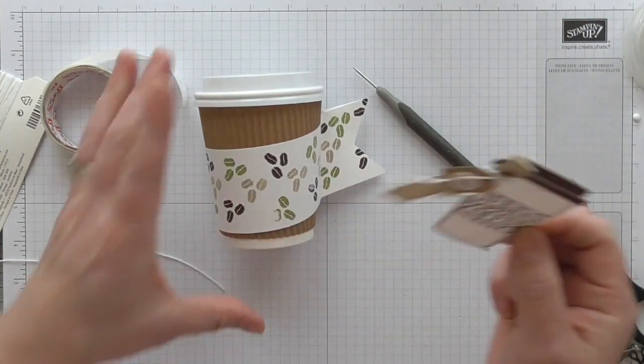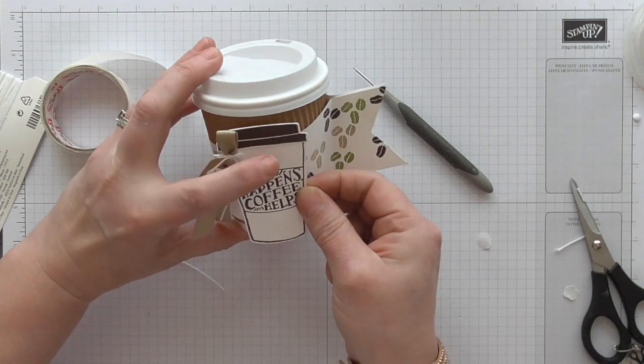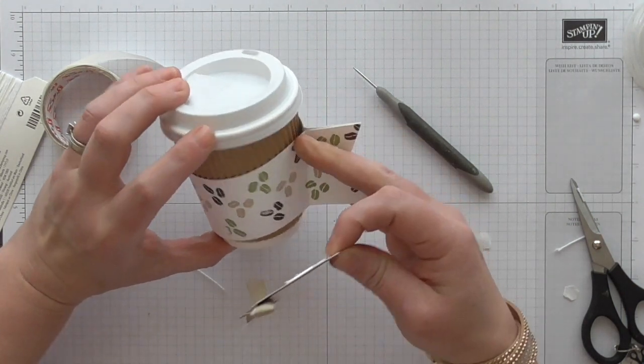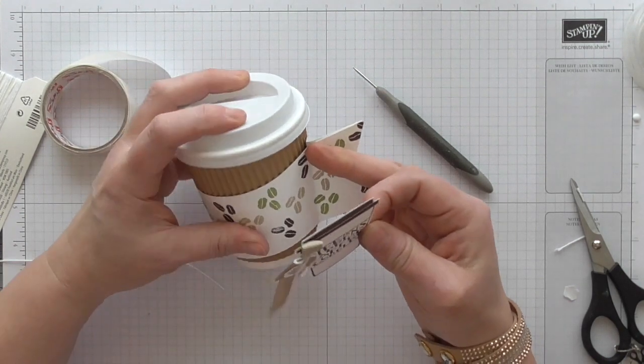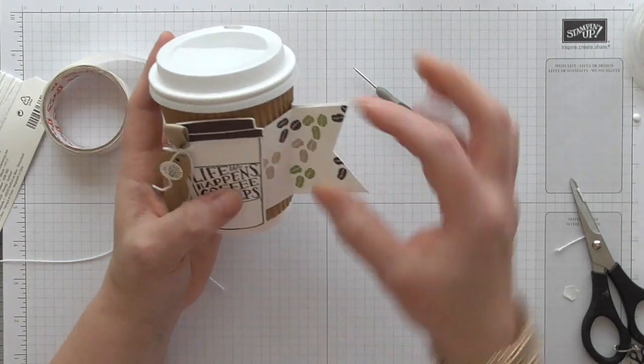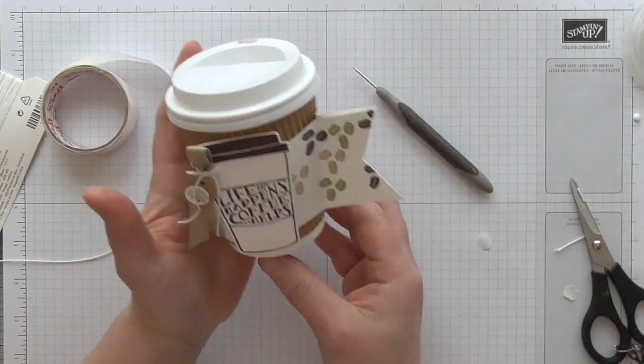That's my little embellishment there. So I can add that to my coffee cup now with some dimensionals. Or you could use tape or you could use glue. My dogs are yapping in the yard. I do apologise. That on its own is a lovely embellishment. As I say, you can use that on your cards, tags, boxes, anything. I'm adding it to this cup here. And how cool does that look? Now we just want something attached to here.